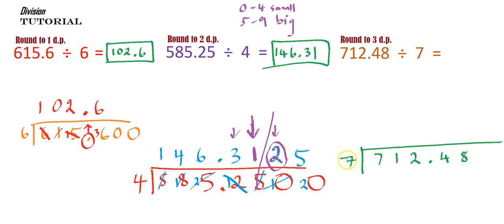And let's start. So, 7 into 7 goes once. 7 into 1 is 0. Carry that 1. 7 into 12 goes once with 5 left over. We're up to the decimal point. Put the decimal point in. 7 into 54, that goes 7 times with 5 left over.